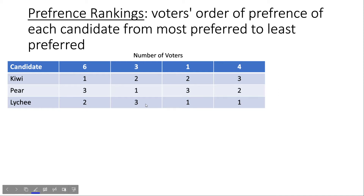In this video we're going to talk about how to read preference ranking tables. This is important for a lot of things we're going to be doing in the first chapter, as other voting methods we'll look at rely heavily on these. A preference ranking table is a collection of every voter's order of preference of each candidate, from most preferred to least preferred.